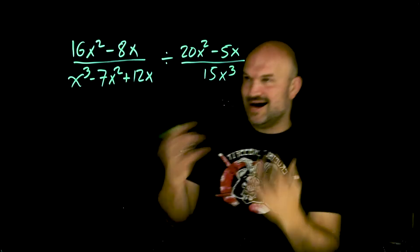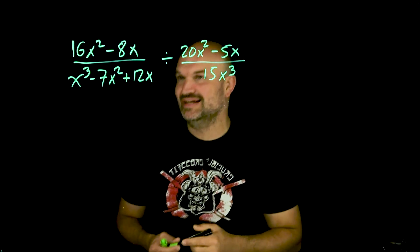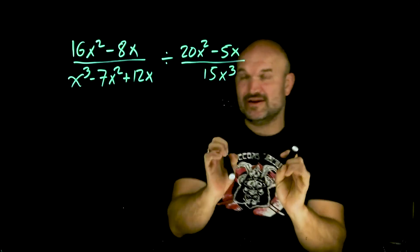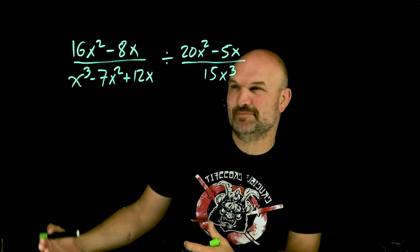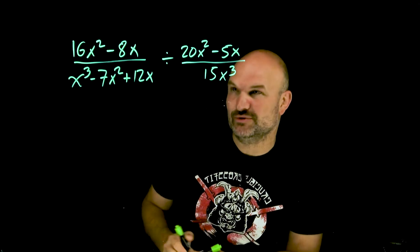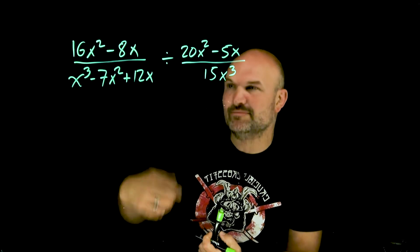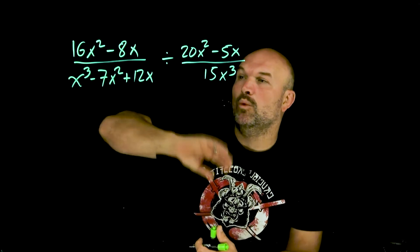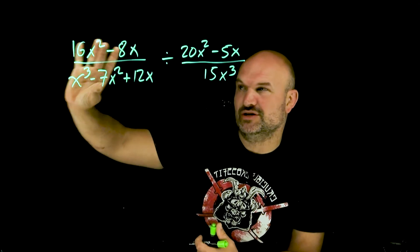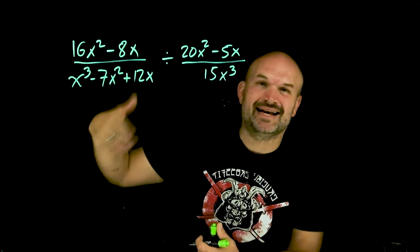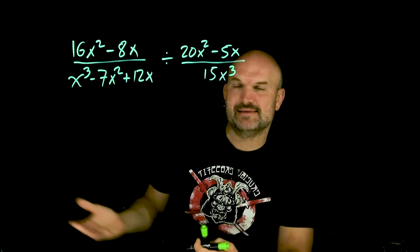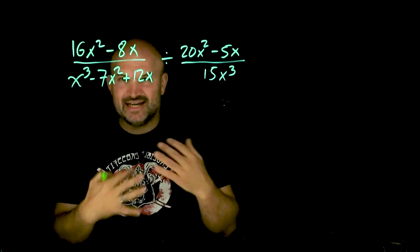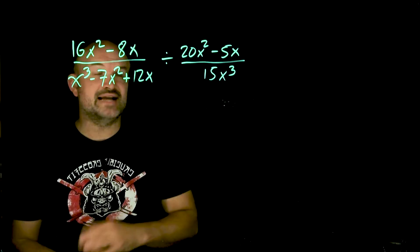Now let's get into a division problem. For division it's critically important to check for excluded values at two different times: once from the original equation, and again after converting to a product by multiplying by the reciprocal. This same approach applies to complex fractions as well, in case there are changes to our non-included solutions.